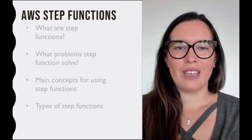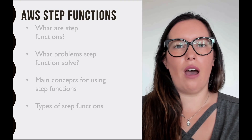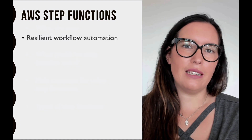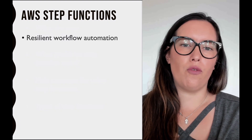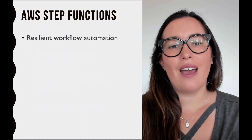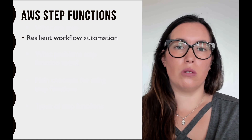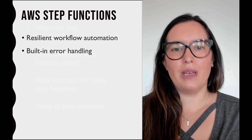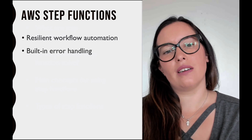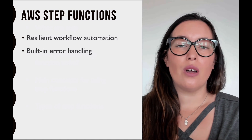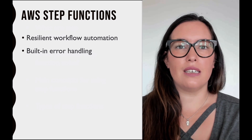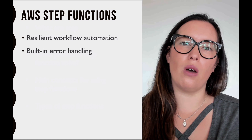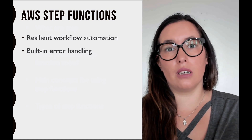Let's get started on what are AWS step functions. Basically, AWS step functions are a way to build resilient workflow automation. It comes with a lot of things like built-in error handling that allows you to create these things around your Lambda functions without needing to embed it in the code.